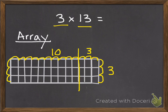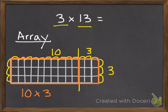So I'm going to make two boxes. Here's my first box — that one's 10 along the top and 3 on the side, so 10 times 3. Then I have a second box that's 3 by 3. Then I can find the answer to each of these.